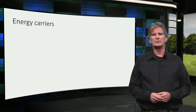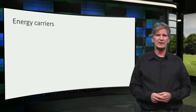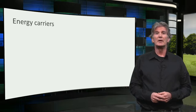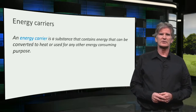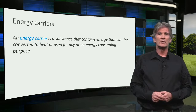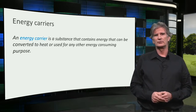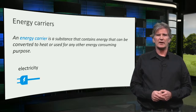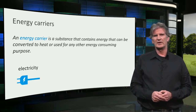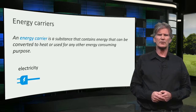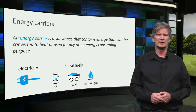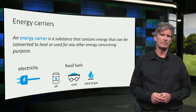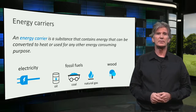The energy for all these purposes must be provided by what we call energy carriers. An energy carrier is a substance that contains energy that can be converted to heat or used for any other energy-consuming purpose. The most common energy carrier is electricity, the most versatile of all forms of energy available. Other examples are fossil fuels like natural gas, coal and oil. And wood can also be an energy carrier when used for heating or cooking.